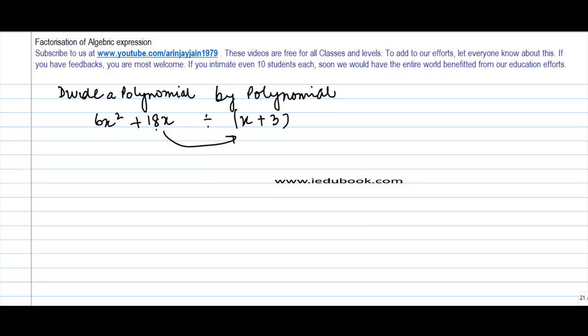Try to break this out into two parts such that you can get the other polynomial in the first one. So if I take 6x common, what do I get? I get x plus 3.